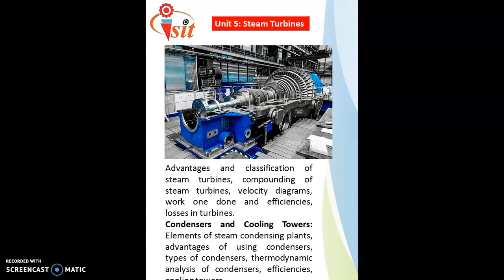The fifth unit is the steam turbine. High-velocity steam from the nozzle strikes the surface of the turbine blades, causing rotation, and the mechanical energy produced is given to the generator for electricity production through Faraday's laws and principles. The unit includes advantages and classification of steam turbines — impulse turbine and reaction turbine — compounding of the steam turbine, velocity triangles, work done equation, efficiency derivation, and losses in the steam turbine.